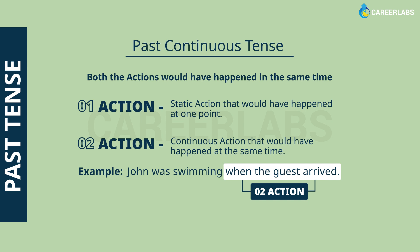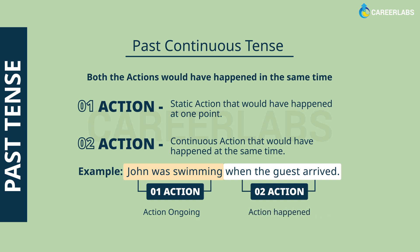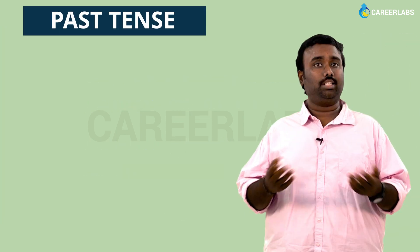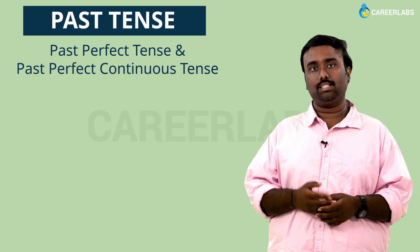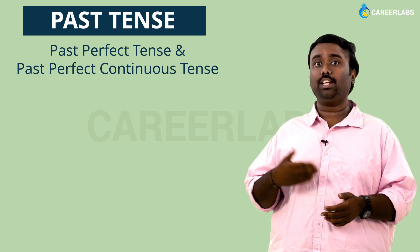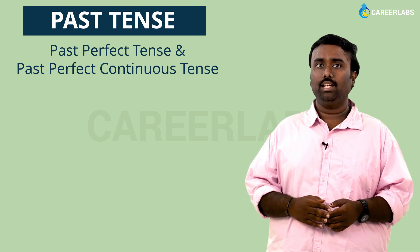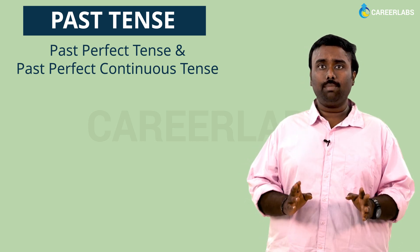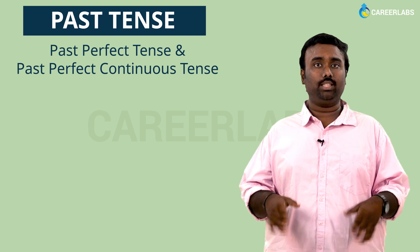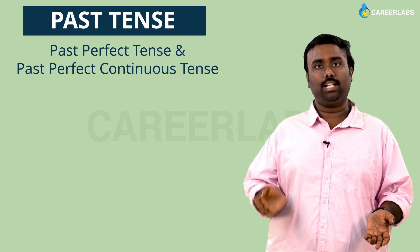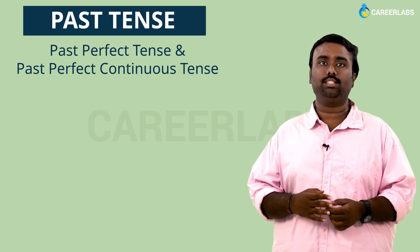The first sentence indicates that the action was ongoing at the point when the second action happened. Moving on to the next aspect — past perfect tense and past perfect continuous. As mentioned earlier, the GMAT doesn't really differentiate between these tenses, so the time clue is the same for both.